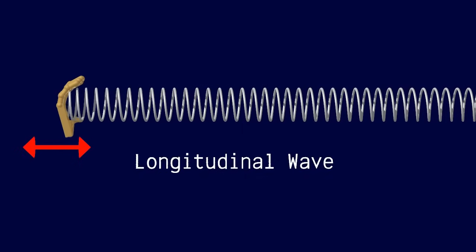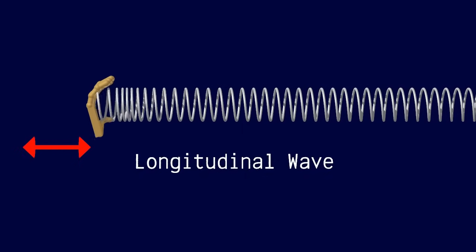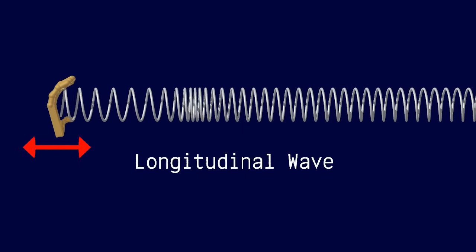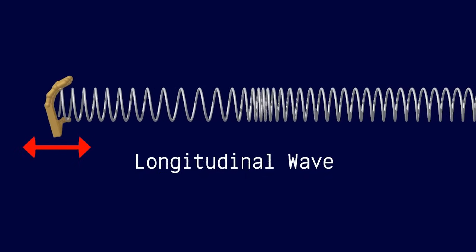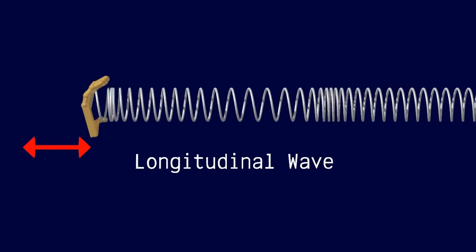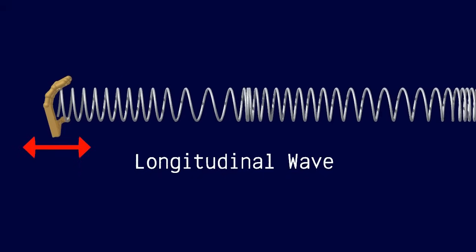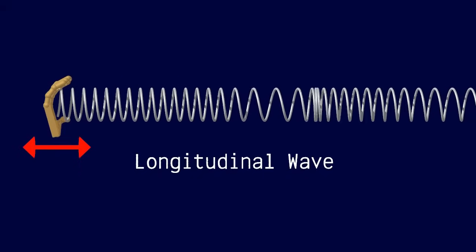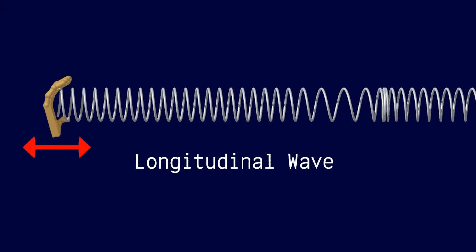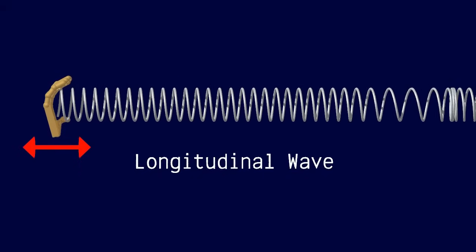In a longitudinal wave, the disturbance that makes up the wave is along the direction in which the wave travels. Longitudinal waves are also referred to as compression waves.